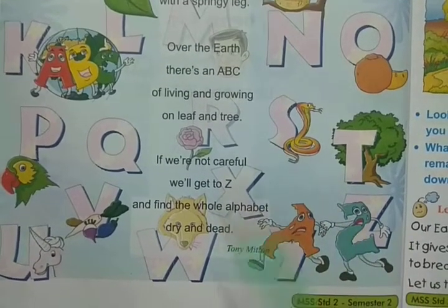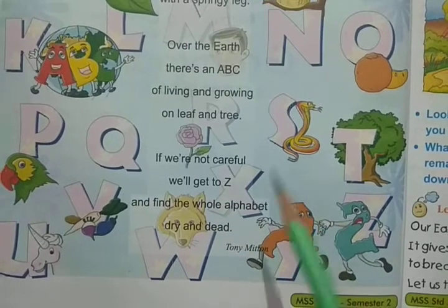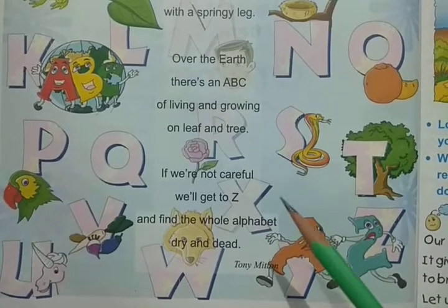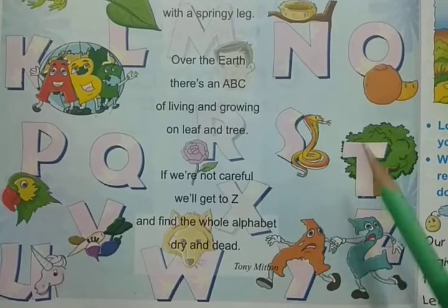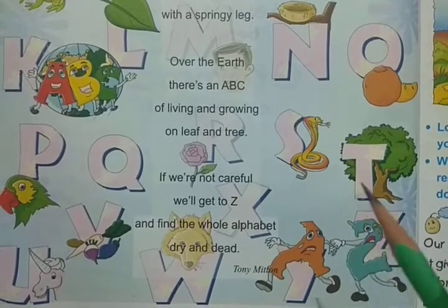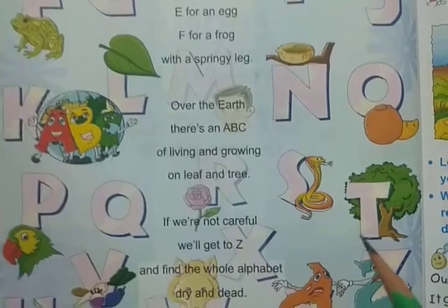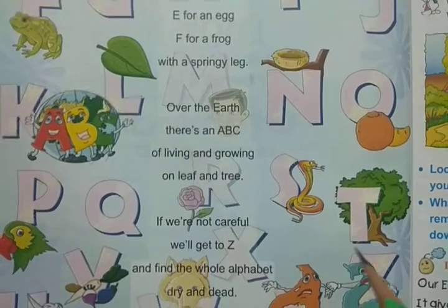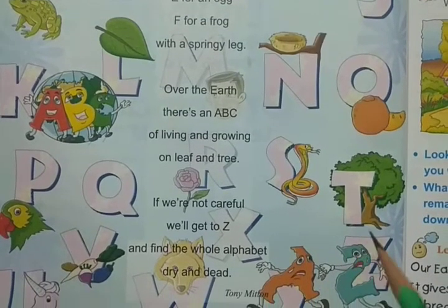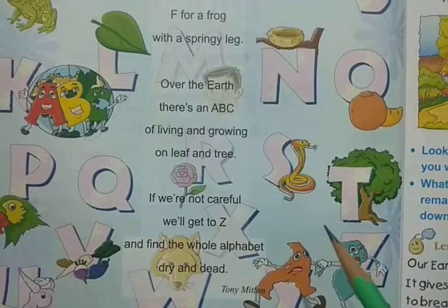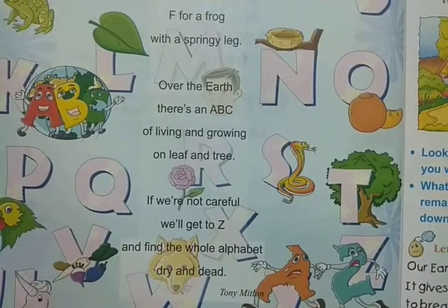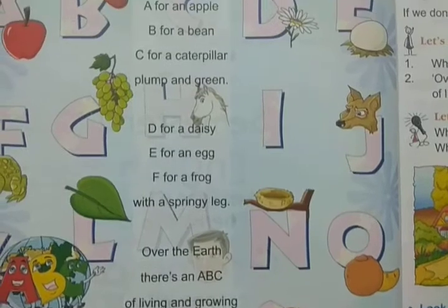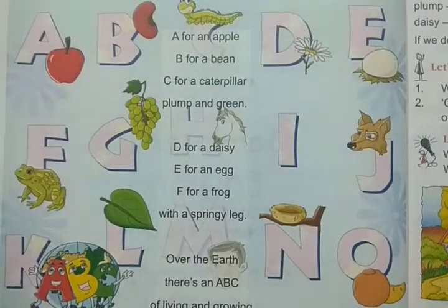The earth is made up of living and growing things. Nature is a very important part of our life. We should take care of our nature and our planet. If we do not do so, nature will completely be ruined. We should take care of our earth and our nature, because it gives us oxygen to breathe. The poet Tony Milton is also explaining this — you should take care of our mother earth.